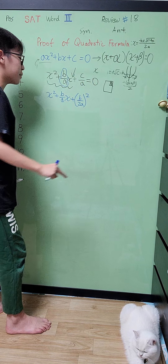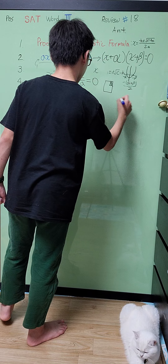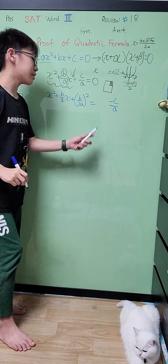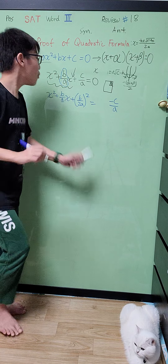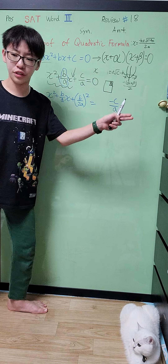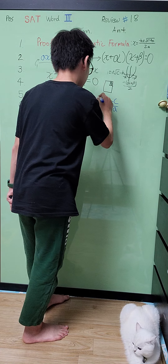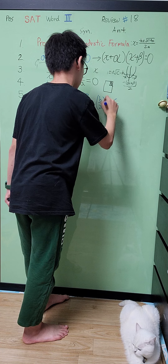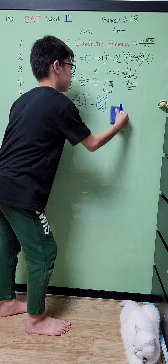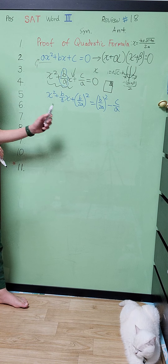We'll move the c/a to the other side, giving us minus c/a. But wait — since we added (b/2a)² to the left side, we have to add it to the right side too. So we add it to both sides to keep the equation balanced.